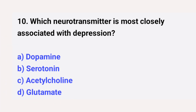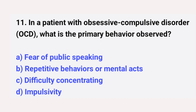Question number ten: which neurotransmitter is most closely associated with depression? The right answer is option B: serotonin. Question number eleven: in a patient with obsessive-compulsive disorder, what is the primary behavior observed? The right answer is option B: repetitive behaviors or mental acts.